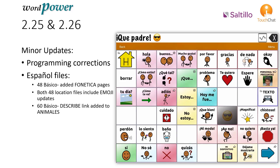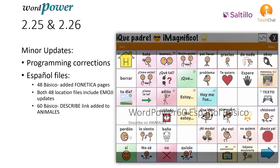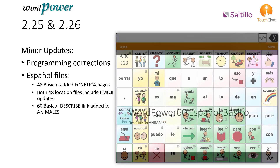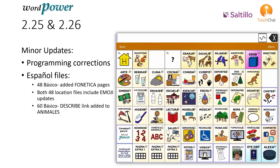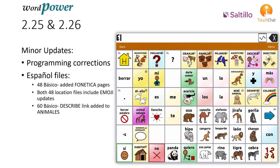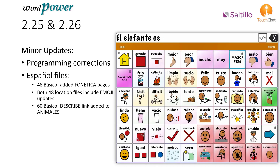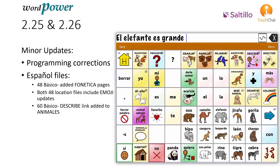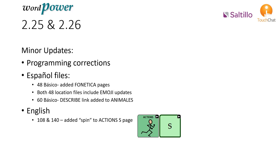The 60 BOSICO file includes a Describe link to the Animals page. The English 108 and 140 location files have the word SPIN added to the Actions S page.